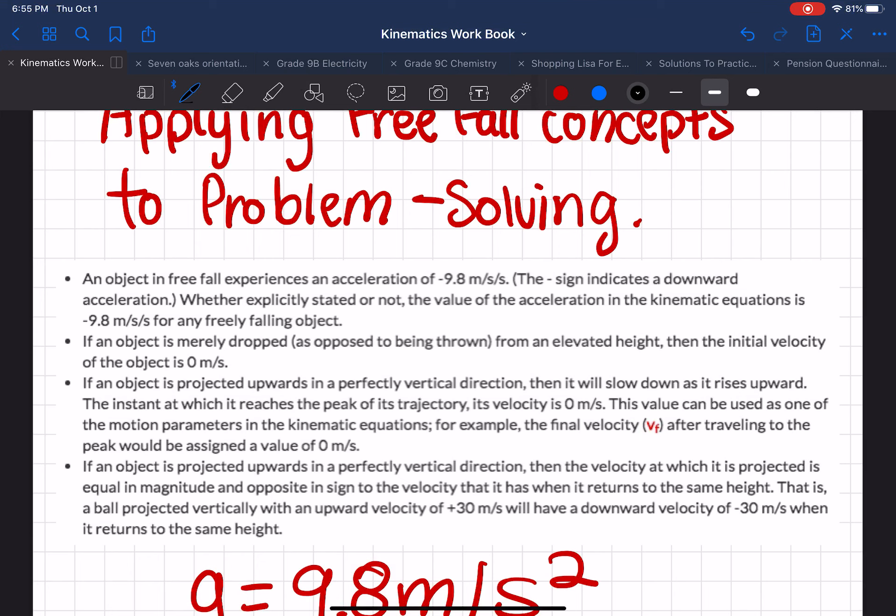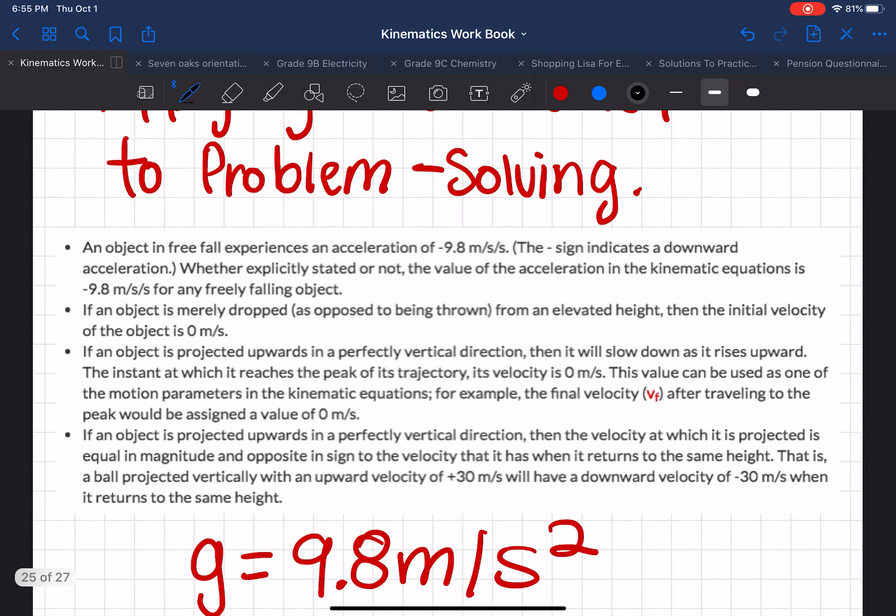This value can be used as one of the motion parameters in a kinematic equation. For example, the final velocity, v subscript f, after traveling to the peak would be assigned a value of 0 meters per second.